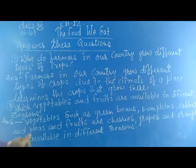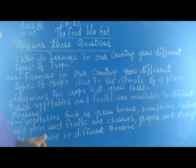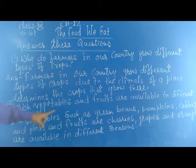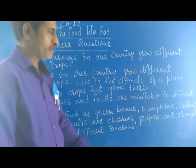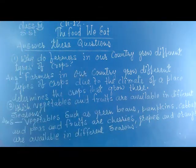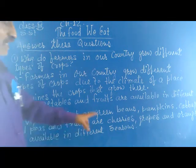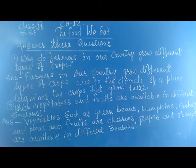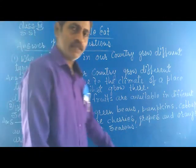Now, question number 2: which vegetables and fruits are available in different seasons? The answer is, vegetables such as green beans, pumpkins, carrots and peas, and fruits such as cherries, grapes and oranges are grown in different seasons.